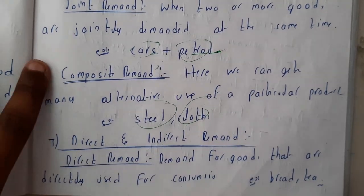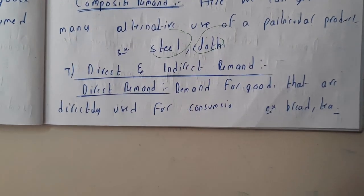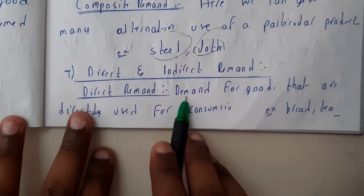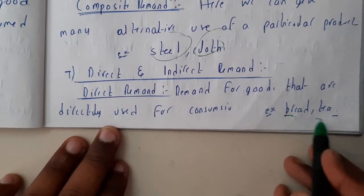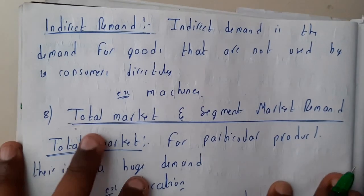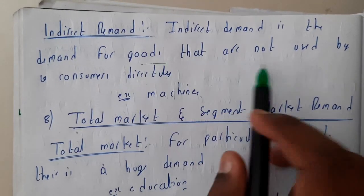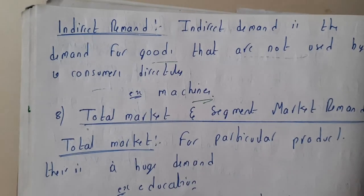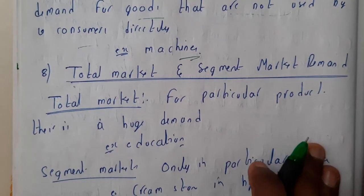After that, we have direct and indirect demand. Direct demand is the demand for goods that are directly used by the consumer — like bread and tea, which we use directly. Indirect demand is the demand for goods not used directly by the consumer, like machines or systems.